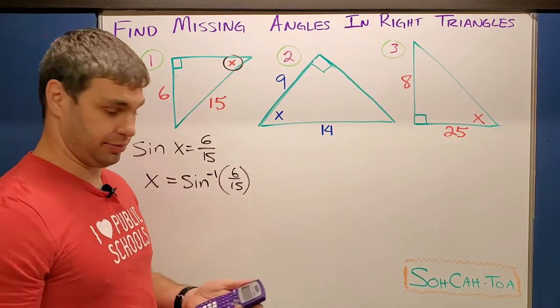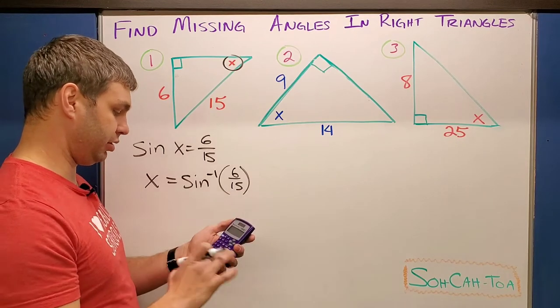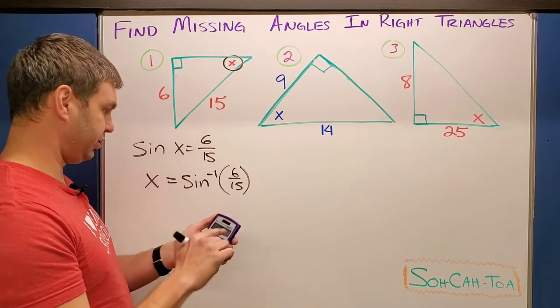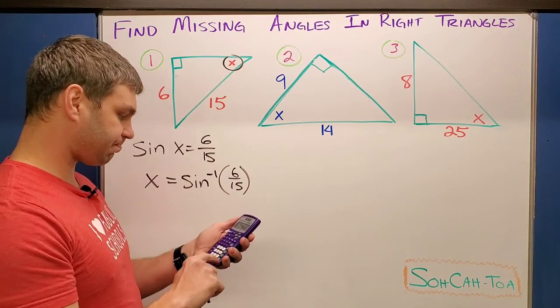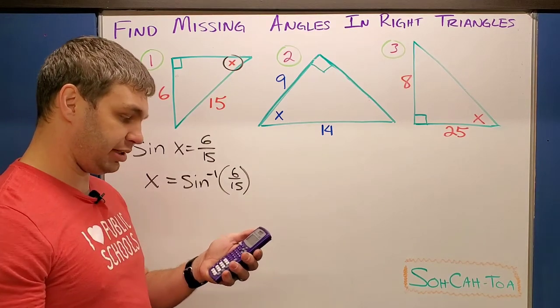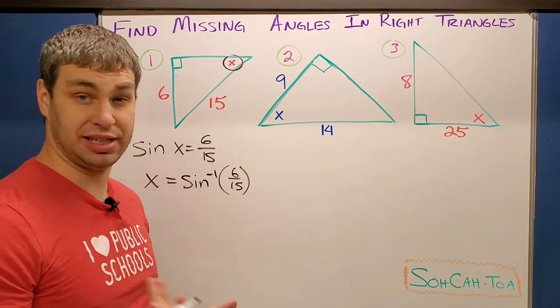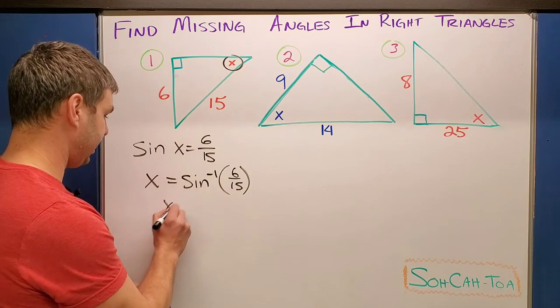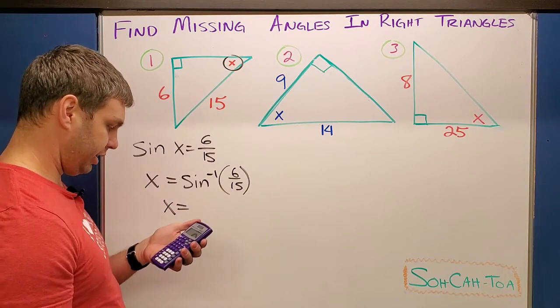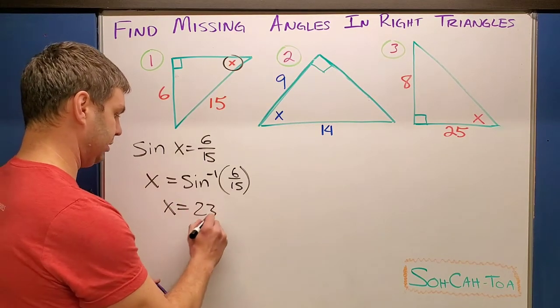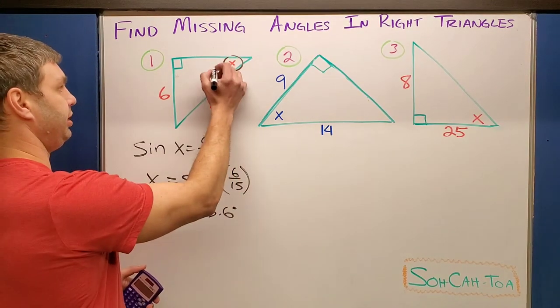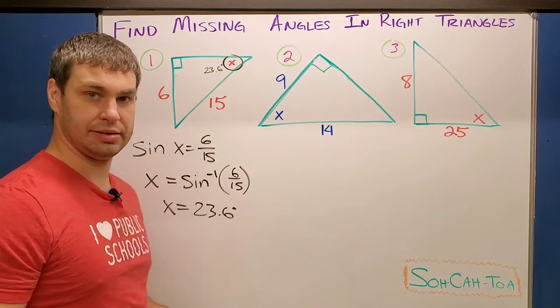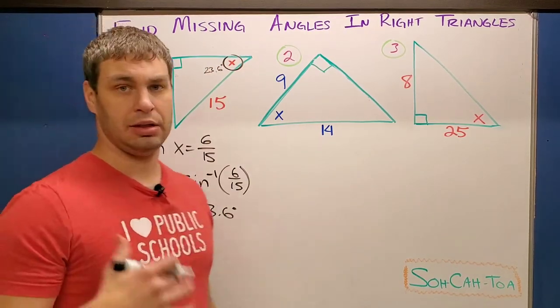Since you have your calculator ready to go, you can just let that do all the work for you. We're going to go second sine to open the inverse sine, and then 6 over 15. This will spit out 23.57. I'm going to round to the nearest tenth of a degree - your teacher might have you round to something else - but for me, I'm going to say that X equals 23.6 degrees. That'd be up here for X: 23.6 degrees satisfies that angle in this triangle.